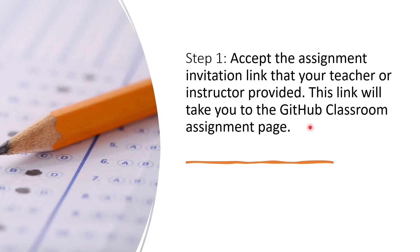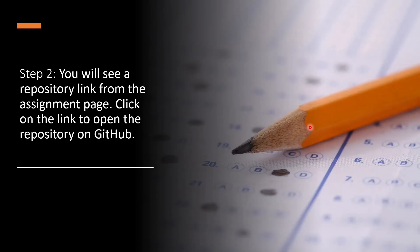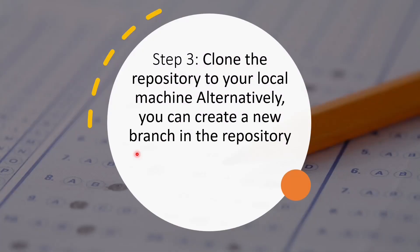You will be taken to the GitHub Classroom assignment page. From there, follow the instructions on the screen. Once you are done with the initial steps, you will be given a repository link. Click on it and you will be taken to the repository page. Next, you have to decide whether to clone your repository to your local machine or create a branch. It depends on the type of assignment and the evaluation criteria your faculty is using. Read the instructions on the assignment page and decide whether to clone or branch, because if your assignment evaluation criteria is based on a pull request, you may need to create a branch instead of a clone.